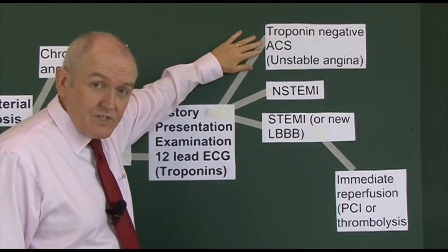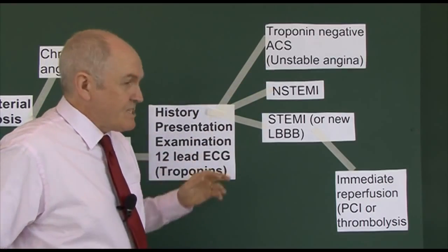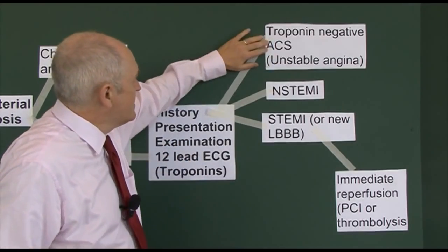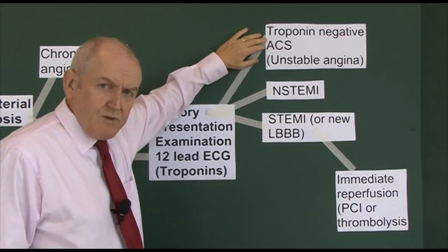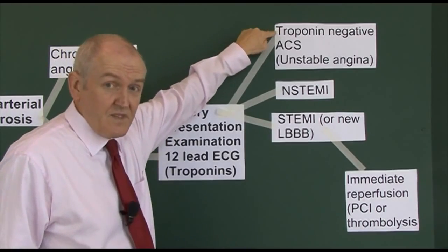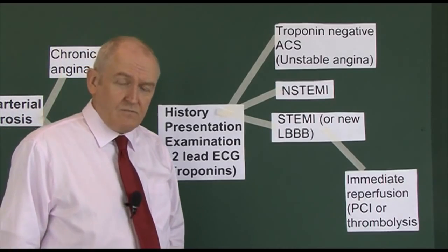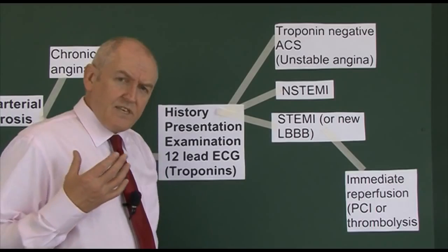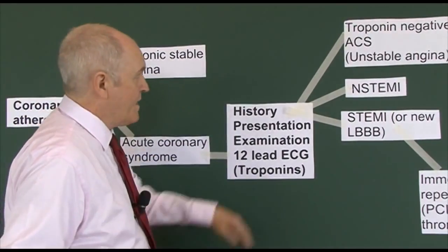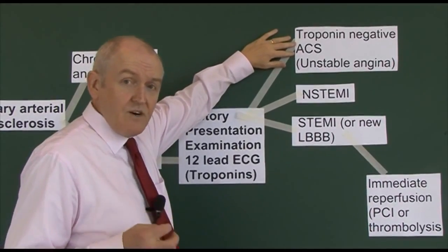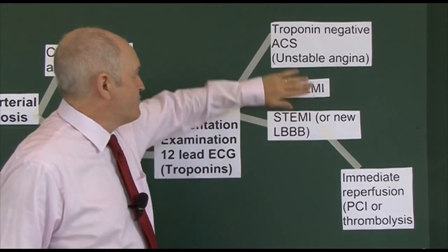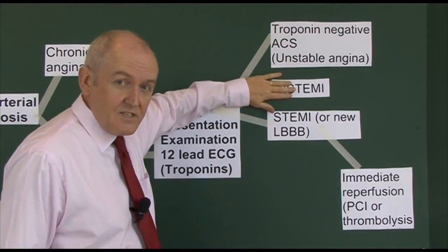With acute coronary syndrome presenting as unstable angina, there is not any release of cardiac markers. There's an increased occlusion of the coronary arterial vessel greatly reducing blood supply to the myocardium, but it's not enough to actually cause necrosis of the myocardium - so you don't get the troponins. This is sometimes called troponin-negative acute coronary syndrome or unstable angina. Although we have to take this very seriously, it's the least serious presentation of ACS. It's important because it indicates a destabilised coronary atheromatous plaque and it can progress to the next stage.